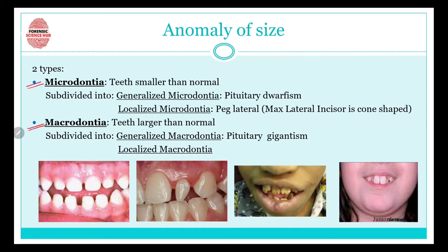First, anomaly of size — there can be two types: microdontia and macrodontia. Microdontia means the teeth are smaller than normal. 'Micro' means small, so in microdontia the teeth are smaller than normal size. Microdontia can be of two further types: generalized and localized. In generalized microdontia, all the teeth are smaller in size, and the reason can be pituitary dwarfism.